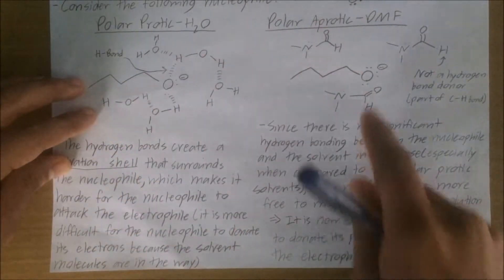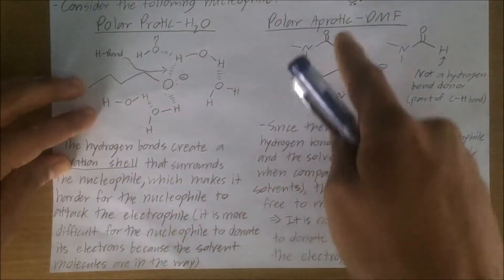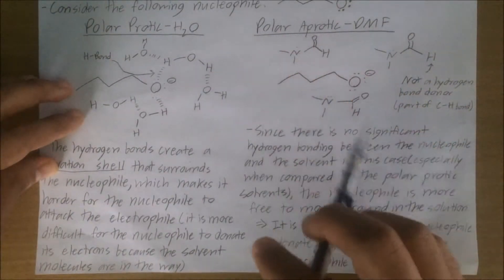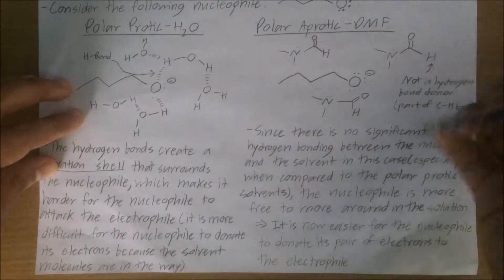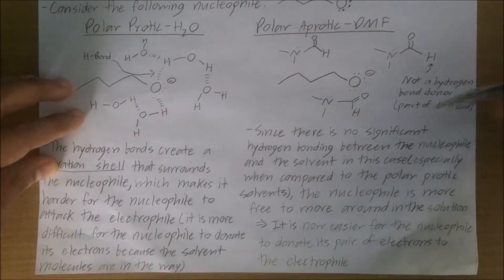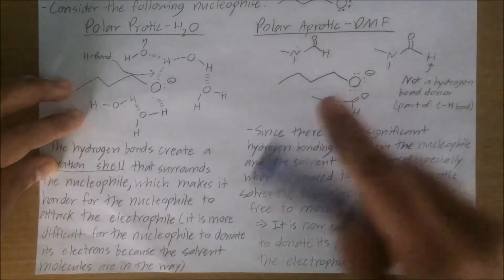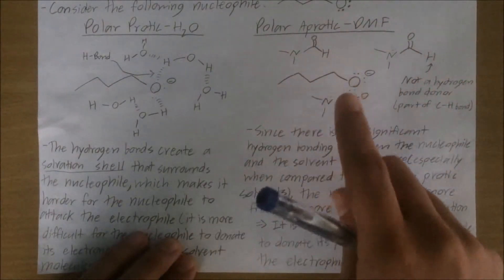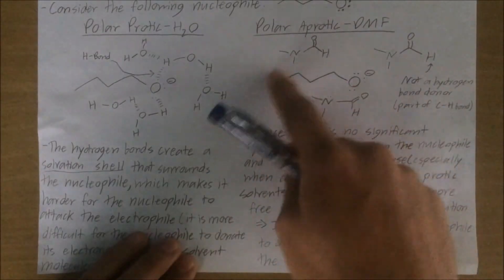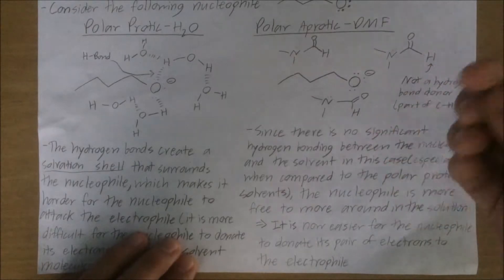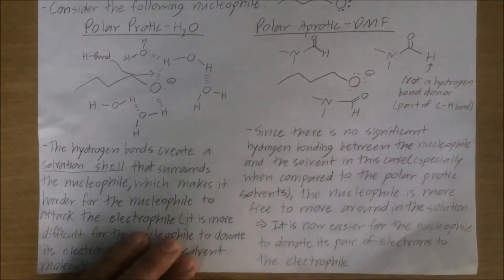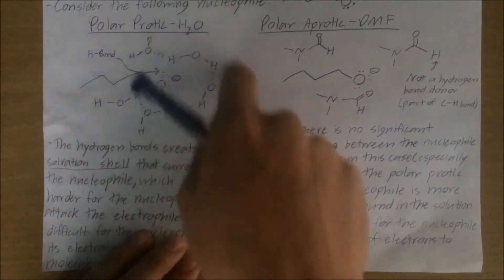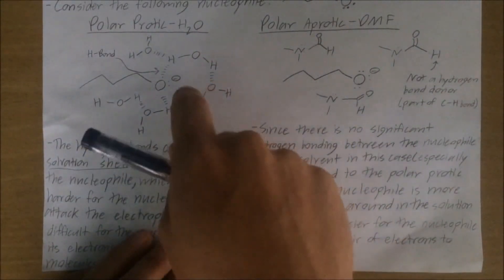Let's compare this to the polar aprotic solvent case. We're going to place the same nucleophile in DMF. Here, there is no significant hydrogen bonding because we only have hydrogen bond acceptors present — we do not have any hydrogen bond donors. This H atom is not a hydrogen bond donor because it's part of a CH group, not an OH, NH, or FH group. Since there's no significant hydrogen bonding, there is no significant solvation shell that forms. As a result, there are fewer solvent molecules in the way, which means the nucleophile can exist more freely in solution and it's easier for it to donate a pair of electrons to the electrophile. So the nucleophile here is stronger compared to the polar protic case, where the solvation shell is problematic for the nucleophile to do its job.